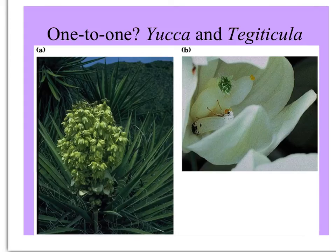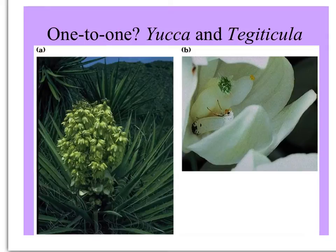An example of one-to-one co-evolution is the obligate mutualism between yucca — this is truly yucca in the Agavaceae, different from yuca which is manioc — and the yucca moth, Tegeticula.